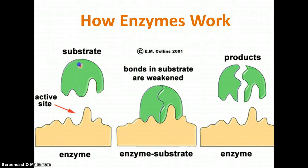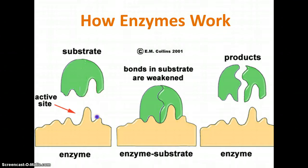Then up on the left, we have the substrate. The substrate is always what you start with, and the substrate is going to match the enzyme right here — you can see that they've got the perfect shape to match each other. That spot where they're going to match up is called the active site. So the substrate and the enzyme come together like this.